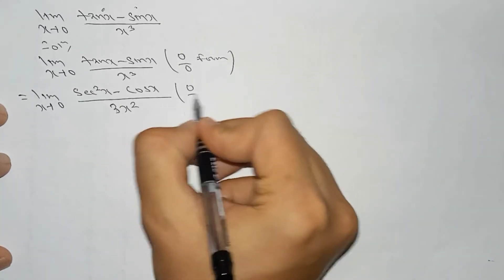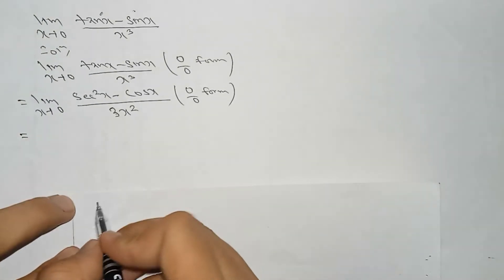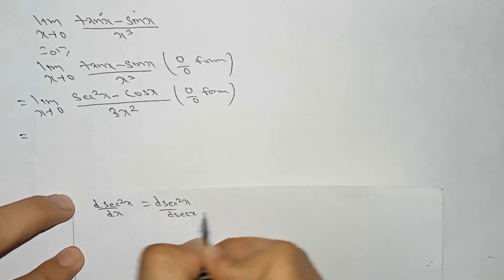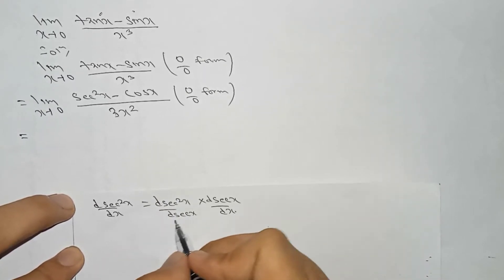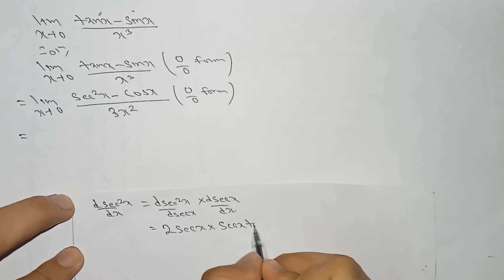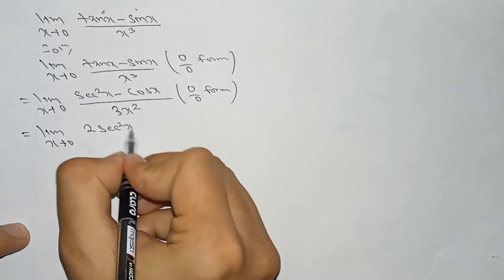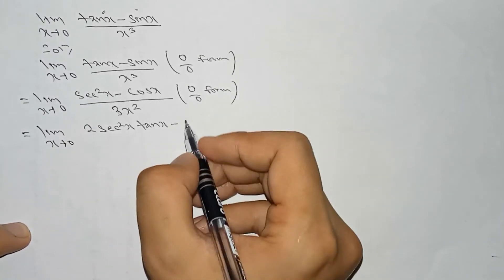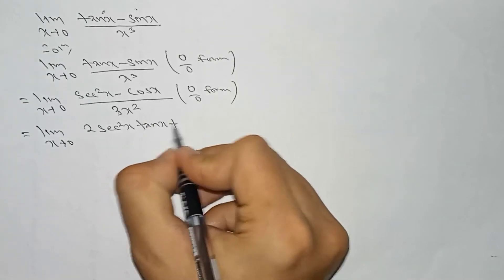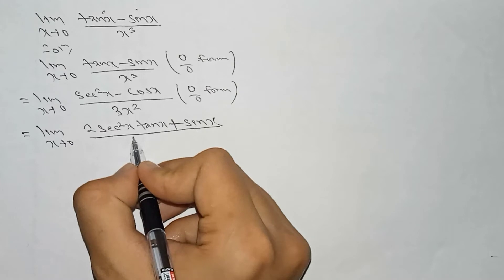It is still in the form of 0 by 0, so again we differentiate. The differentiation of sec square x — using the chain rule — is 2 sec x times sec x tan x, which gives 2 sec square x tan x. So we can write: limit x tends to 0 of 2 sec square x tan x minus the differentiation of cos x, which is minus sin x, so minus minus becomes plus sin x, divided by 6x.